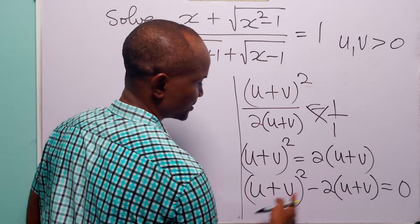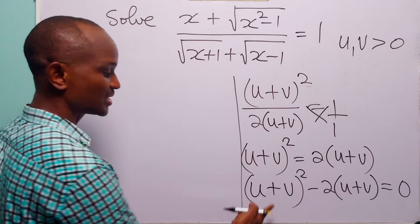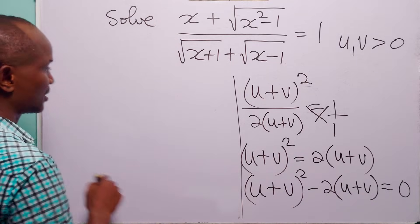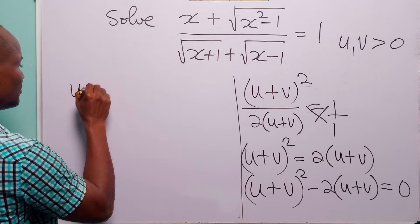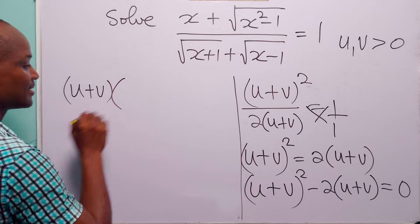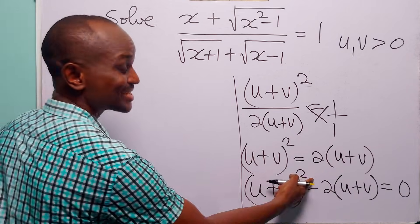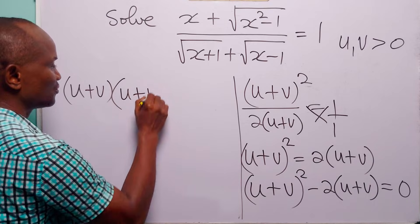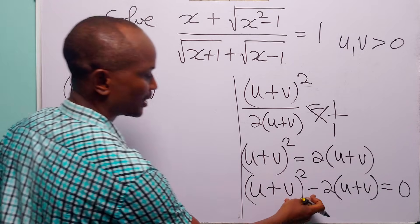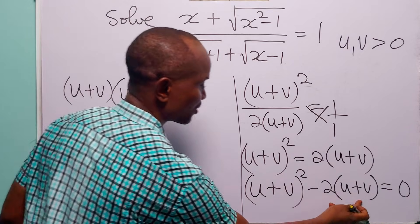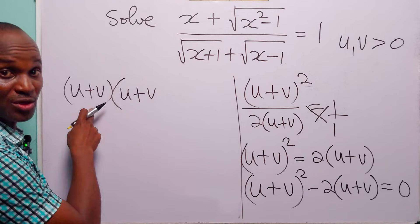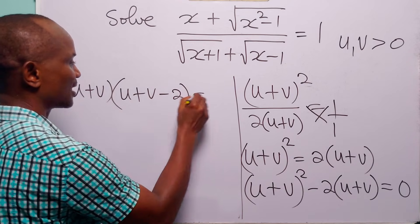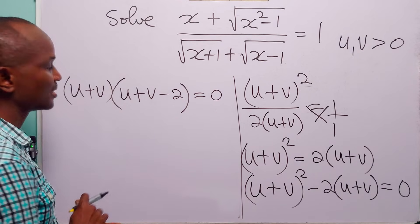Looking at these two terms, we can see a common factor of (u plus v). Factorizing that out, we get (u plus v) times [(u plus v) minus 2] is equal to 0.